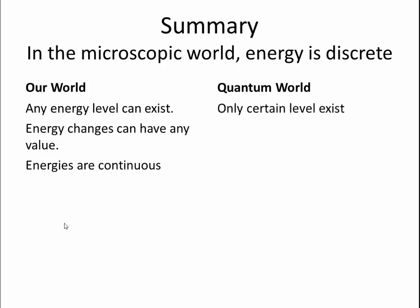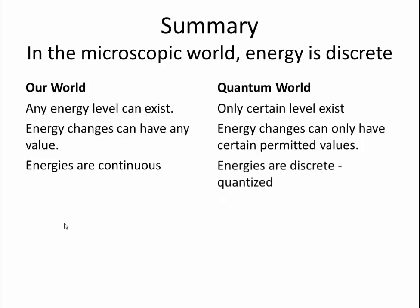In the quantum world, however, only certain levels exist. Energy changes can have only certain permitted values, depending on the positioning of the rungs in the ladder, so to speak. In other words, the energy outputs are discrete, or quantized. You can only get certain values, and there's certain other values that you can't have, because they don't correspond to energy jumps on the ladder.